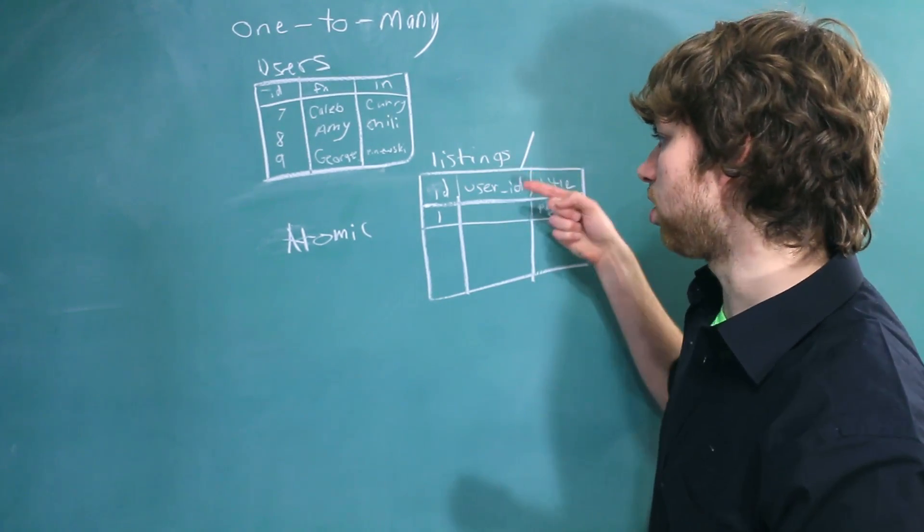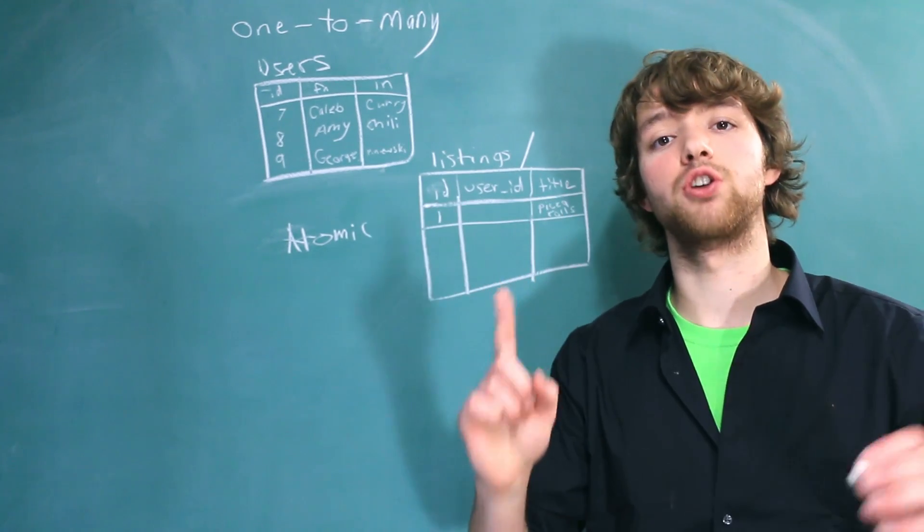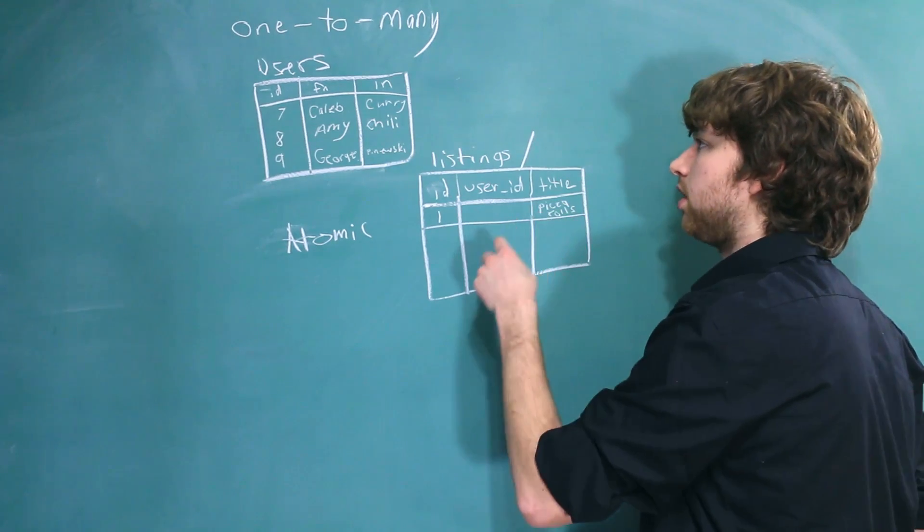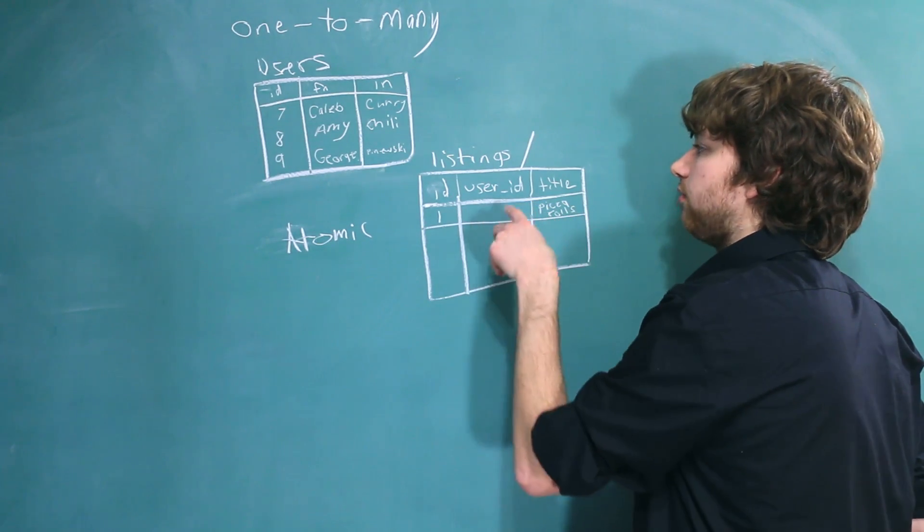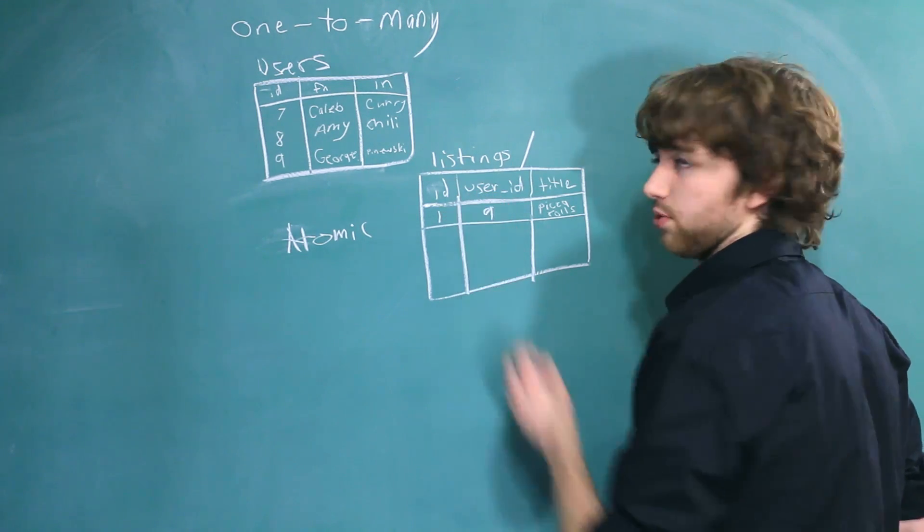But now the rows have to be atomic too. They only store one value for each column. So we already have one value for the ID, we have one value for the title, and we have one value for the user ID, and we'll make that nine. That was a hard choice.